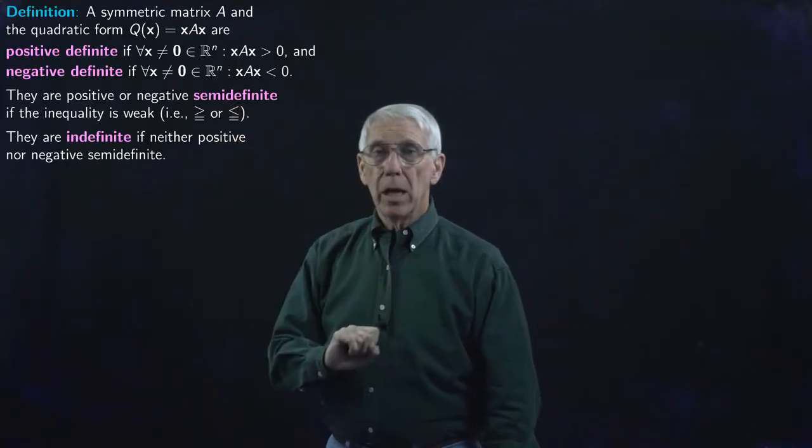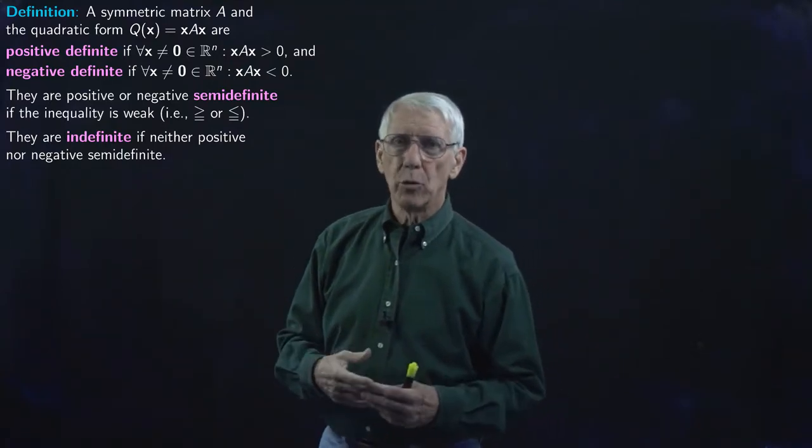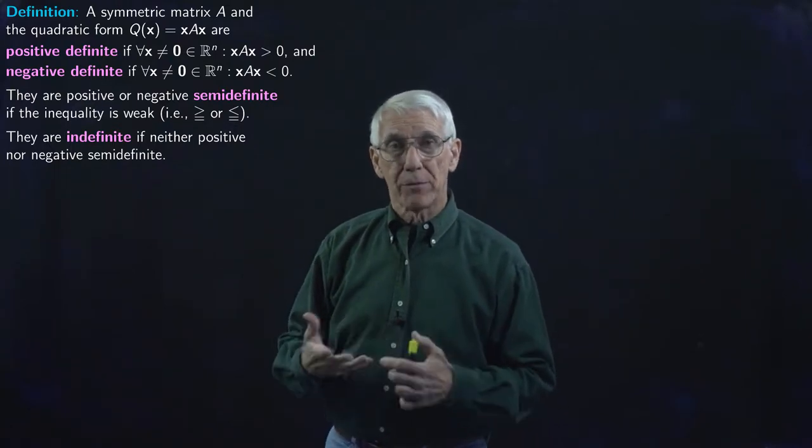For example, if we want to know that a consumer is maximizing utility, we will want to know whether a quadratic form associated with their utility function is positive definite or negative definite. If we want to know whether a firm is maximizing profit at a particular decision of inputs and outputs, we'll want to know whether the quadratic form associated with its profit function is always positive or negative.